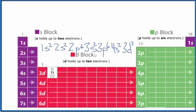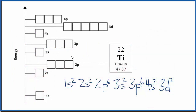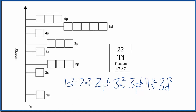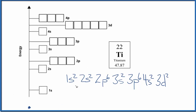So we use this to write our atomic orbital diagram for titanium. Both the atomic orbital diagram and the electron configuration are just trying to show where the electrons are around the nucleus of the titanium atom. You can imagine the nucleus and then we'd have these energy levels — think of them as shells around the nucleus.